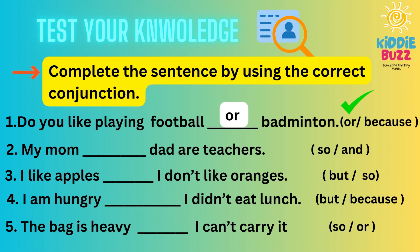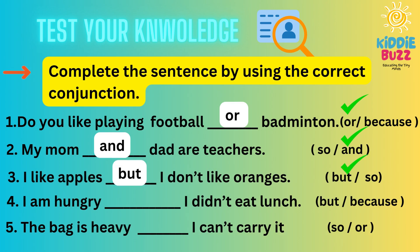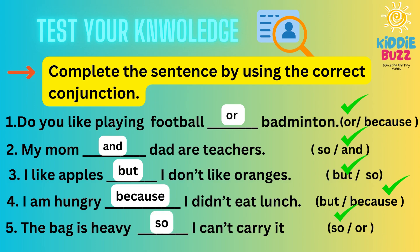The right answers are: 'Do you like playing football or badminton?' — OR. 'My mom and dad are teachers.' — AND. 'I like apples but I don't like oranges.' — BUT. 'I am hungry because I didn't eat lunch.' — BECAUSE. 'The bag is heavy so I cannot carry it.' — SO.